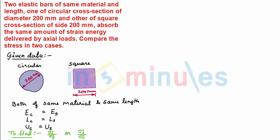Let's solve the problem. Solution: we start with this given relation that strain energy in circular section is same as that of strain energy in square section. So, we have U_C is equal to U_S.